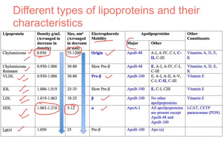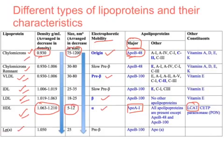Now let's look at the major apolipoproteins on each lipoprotein. The major apolipoprotein of chylomicrons is ApoB48. For VLDL, it is ApoB100, and since IDL and LDL are VLDL derivatives, ApoB100 continues on them. The major apolipoprotein of HDL is ApoA1, which acts as an activator of the enzyme LCAT located on HDL. ApoB48, present in chylomicrons, is synthesized in the intestine, and its gene is the ApoB100 gene.